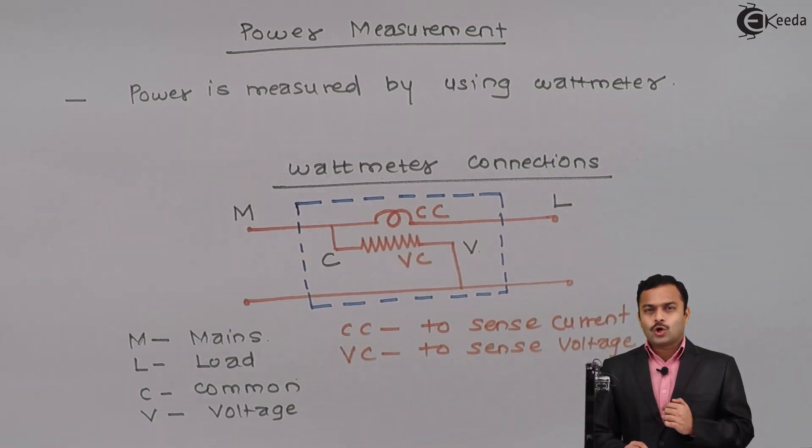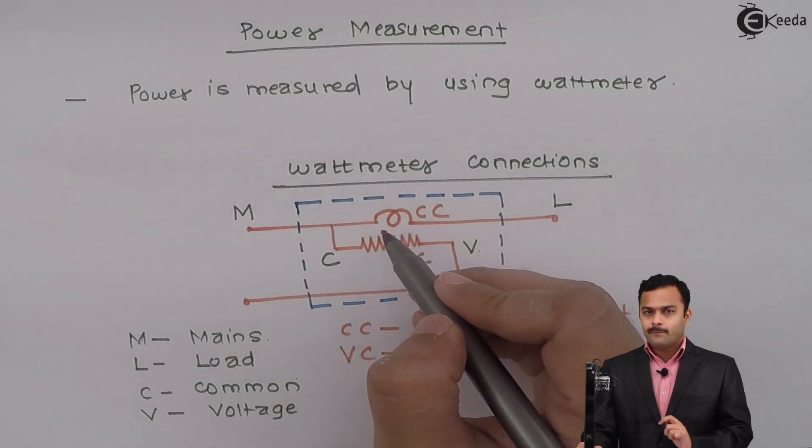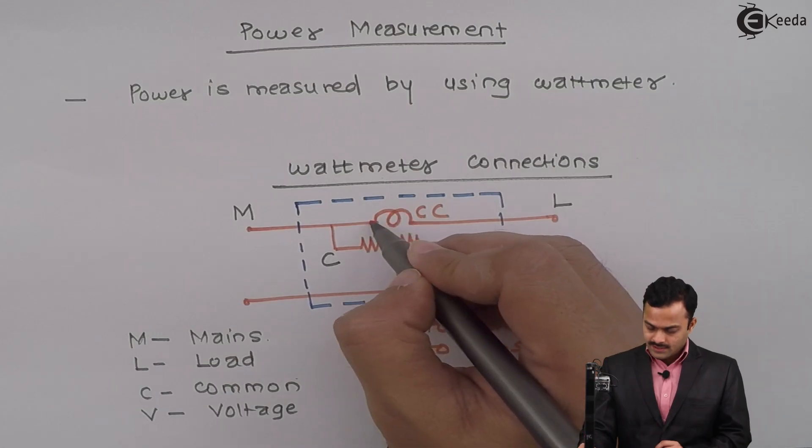Now, the current coil acts like an ammeter. An ammeter has very low resistance in series with a galvanometer, so the current coil should have very low resistance. In order to have very low resistance, this coil is made up of thick wire.